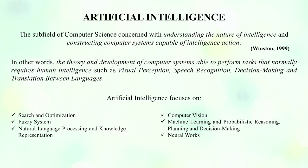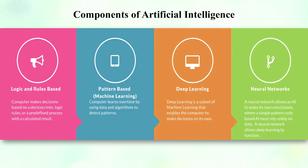Artificial intelligence also focuses on search and optimization, natural language processing, knowledge representation, computer vision, and neural networks. Today there are four basic components of artificial intelligence. First, logic and rule-based: the computer makes decisions based on decision trees, logic rules, or predefined processes to produce calculated results. Second, pattern-based, generally referred to as machine learning: the computer learns over time using data and algorithms to detect patterns.